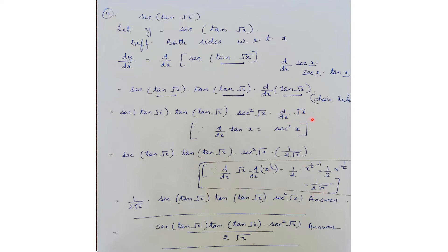So collecting everything, the answer is sec(tan(√x)) · tan(tan(√x)) · sec²(√x) · 1/(2√x). You can leave the answer here — it is correct. But to match the format given in NCERT as a solution, we can write it as sec(tan(√x)) · tan(tan(√x)) · sec²(√x) all over 2√x.